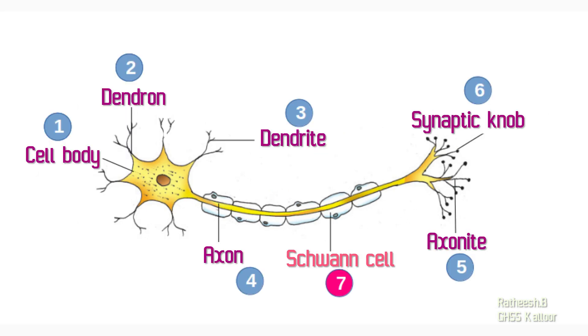Now we have analyzed the main parts of a neuron, their characteristics and functions. For more clarity, you can watch a video relating to the structure of a neuron.